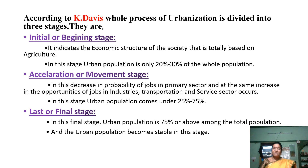In the last or final stage, urban population is 75% or above among the total population, and the urban population becomes stable in this stage.